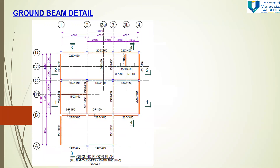This is an example of a ground floor plan. You may see the grid lines and the ground beam. The red line is the ground beam, and you can see the number — dp 150 here — with an arrow. The slab thickness is equal to 150 mm thick unless noted otherwise.